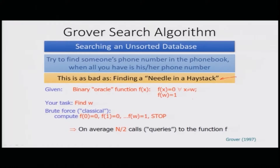It can be mathematically formulated as a problem where, given a binary oracle function f(x), the function would essentially get a value of 1 when the right answer is found. Otherwise, when x is not equal to w, it will always give 0. The task in this case is to find the value of w. In the brute force or classical approach, every particular value has to be computed at least half the time unless f(w) = 1 is found.